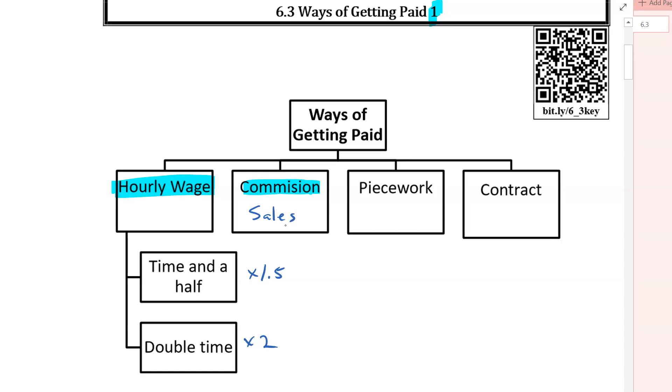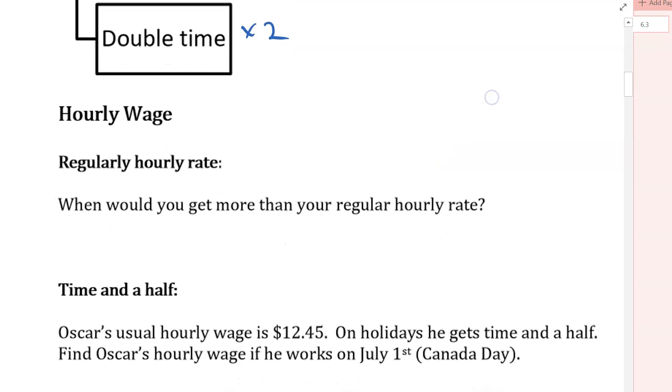Sales commission is usually based on a sales job where it's some percentage of your sales. So that's kind of an overview. I guess the first thing that we could take a look at is a couple definitions. So when we're doing an hourly wage, you can have a regular hourly rate, also known as the rate you are normally paid.